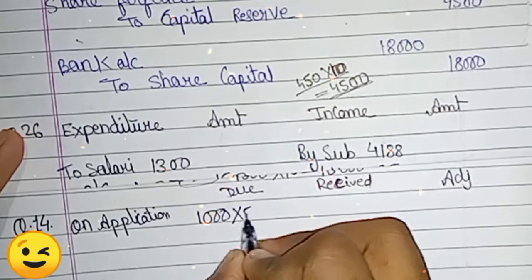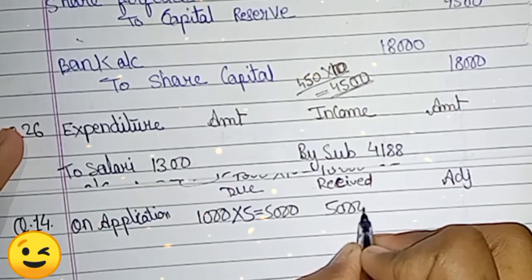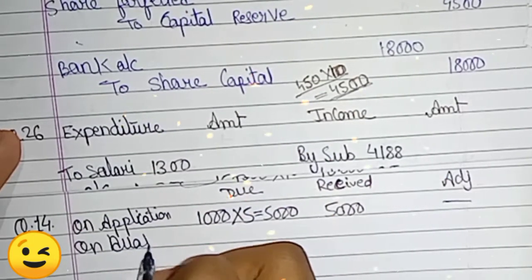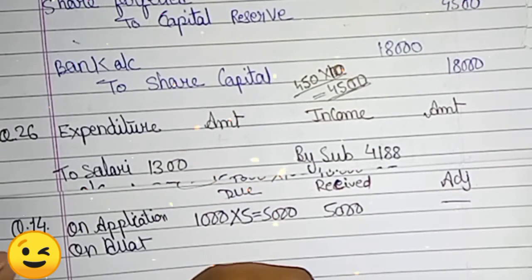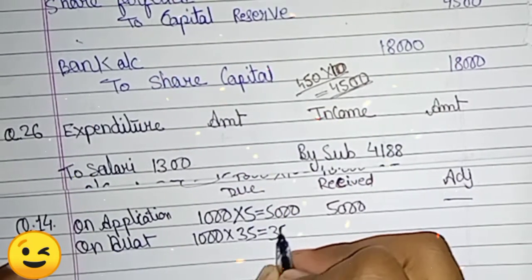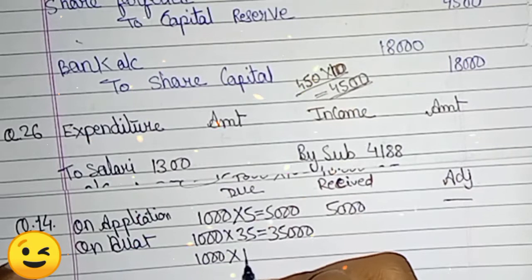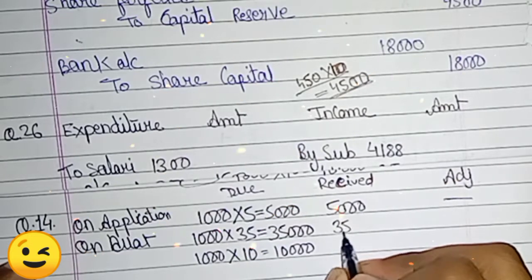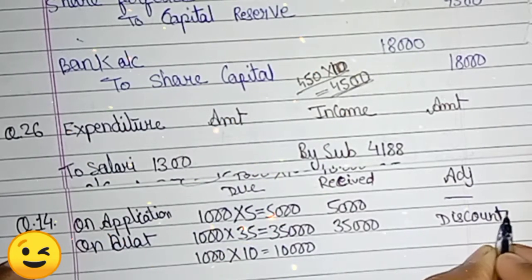On application: 1,000 × 5 = Rs. 5,000. Received amount is Rs. 5,000 and there is no adjustment. On allotment: the original amount is 1,000 × 35 = Rs. 35,000. The discount is 1,000 × 10 = Rs. 10,000. So Rs. 35,000 is received and Rs. 10,000 is the discount adjustment.